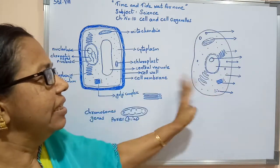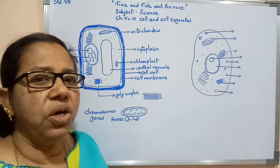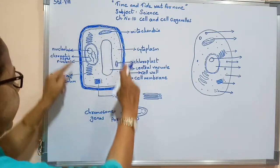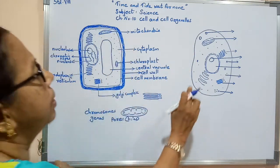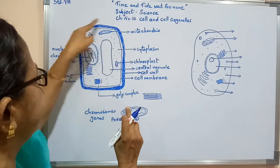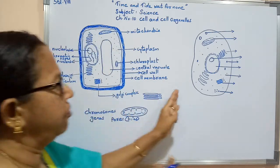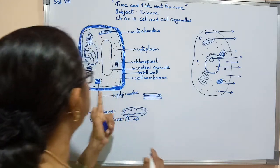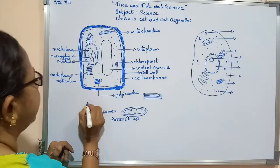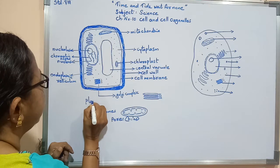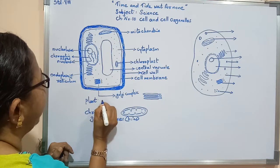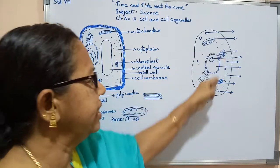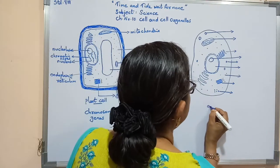The animal cell does not have a cell wall. The plant cell has a thick cell wall and a definite shape, but the animal cell has no cell wall.